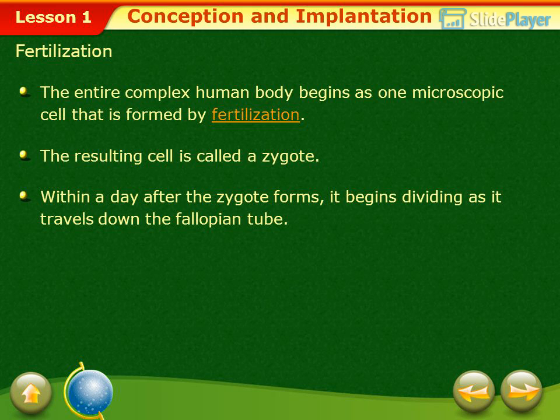Fertilization: The entire complex human body begins as one microscopic cell that is formed by fertilization. The resulting cell is called a zygote. Within a day after the zygote forms, it begins dividing as it travels down the fallopian tube.